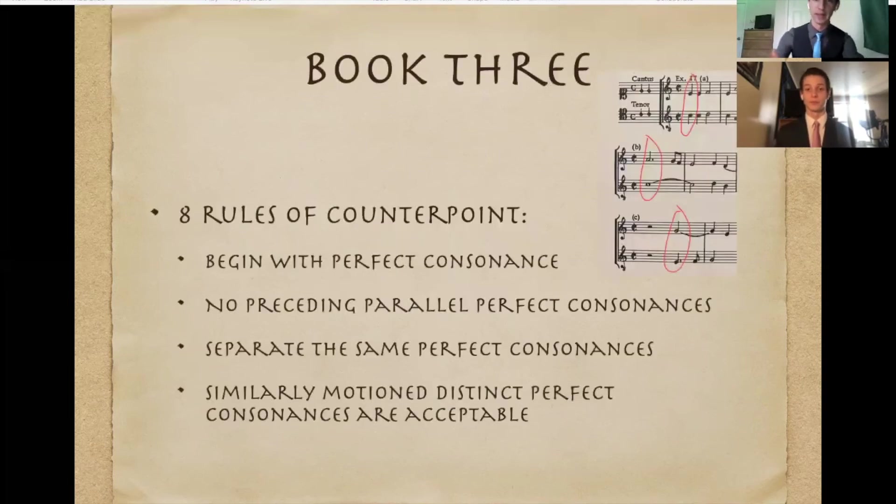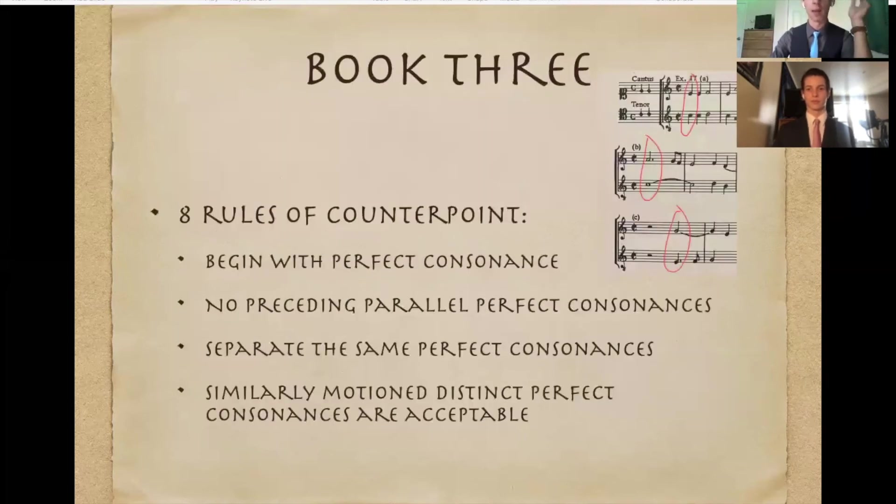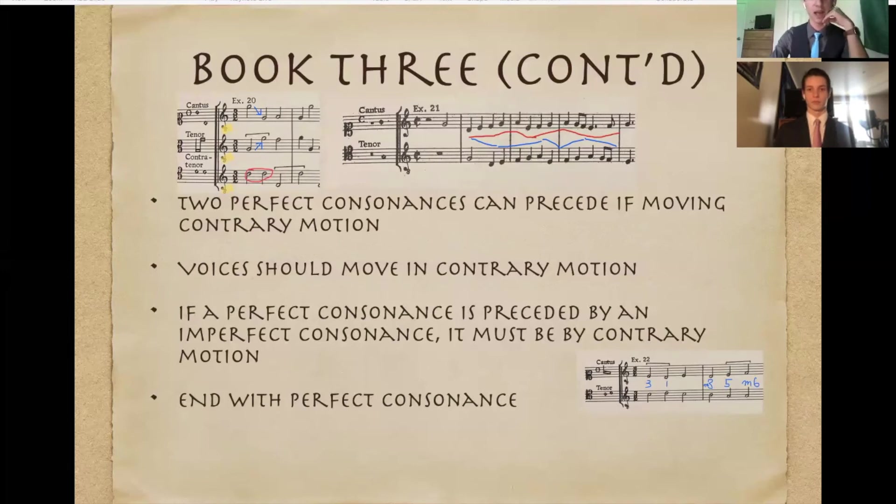So book three is specifically about counterpoint and contrapuntal procedure. So basically goes through and lists the eight rules of counterpoint in addition to false counterpoint and what not to be doing with counterpoint. There's not too much you can really talk about besides going to the fact that they're just the basic rules of counterpoint. I mean, ending with a perfect consonance, beginning with a perfect consonance, parallel fifths, parallel octaves are bad. Voices should move in contrary motion. Don't cross the voices, just the basics of part writing really.